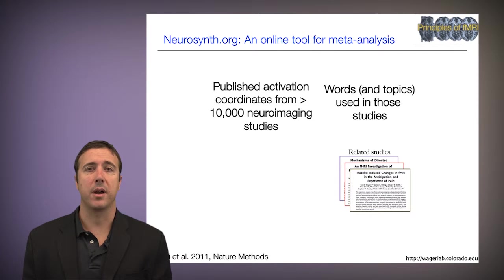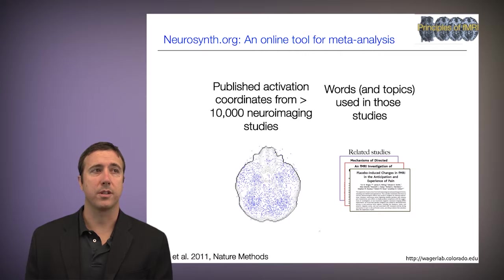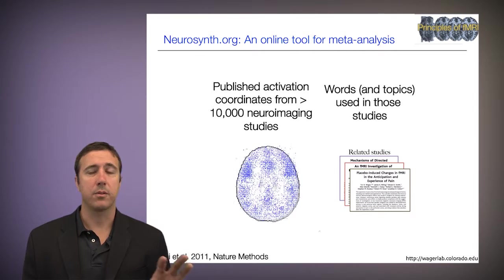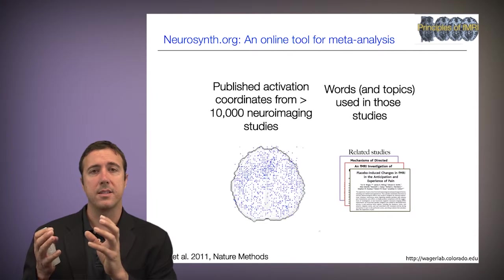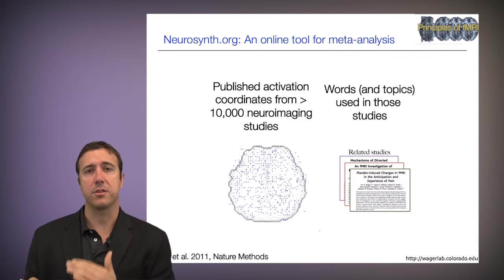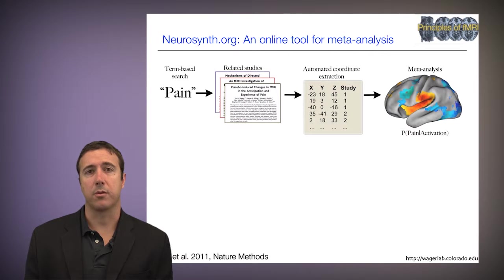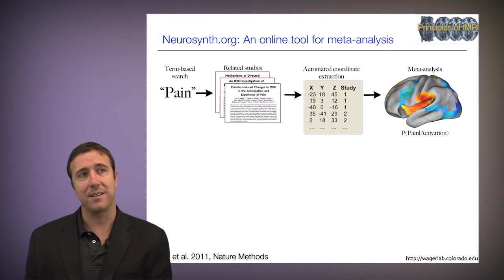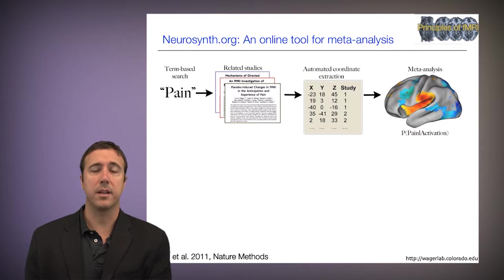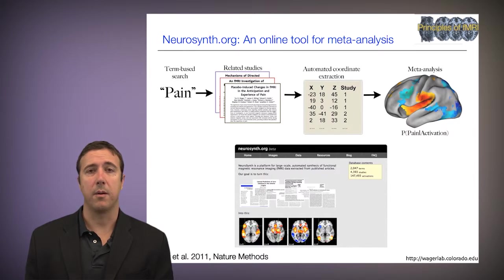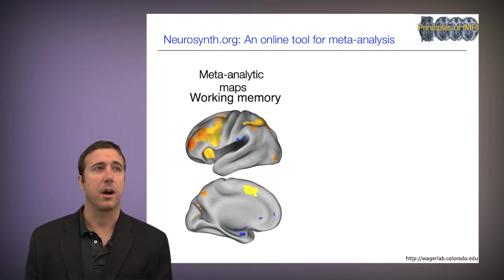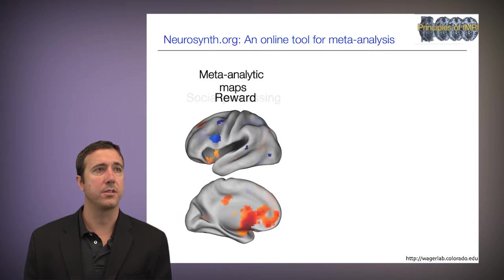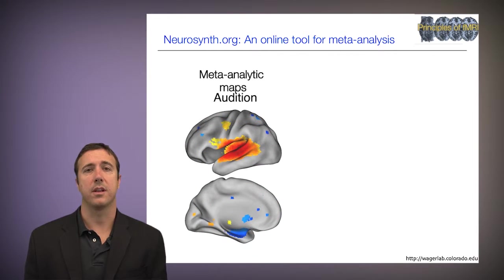Another tool is Neurosynth.org, an online tool for meta-analysis built by Tal Yarkoni. It contains published activation coordinates from 10,000 or more neuroimaging studies, along with saved text, keywords, and topics from each of those studies. Those studies and coordinates can be mined for relationships. If you do a term-based search for something like pain, it identifies studies that discuss pain frequently and their coordinates, then constructs an automated meta-analysis. There are now maps for 10,000 common terms — examples include vision, social processing, memory, reward, pain, memory retrieval, language, and emotion.